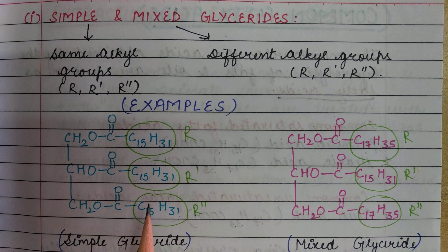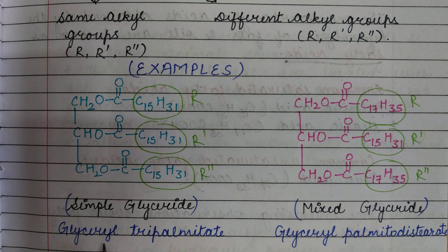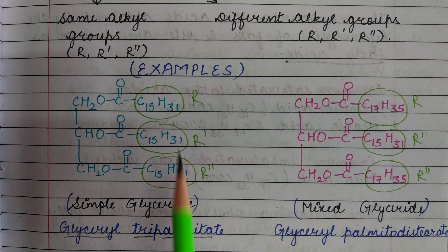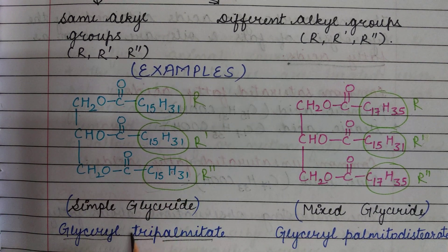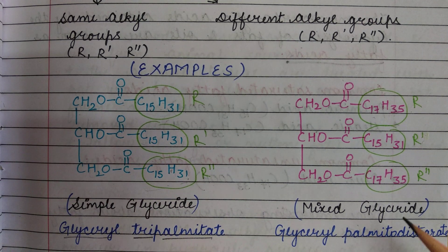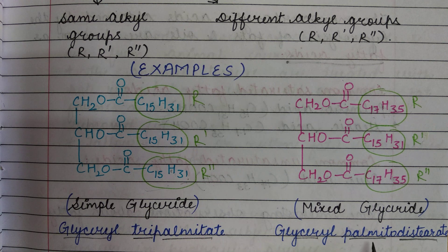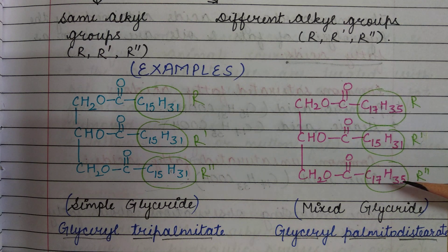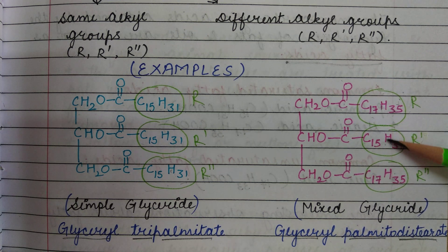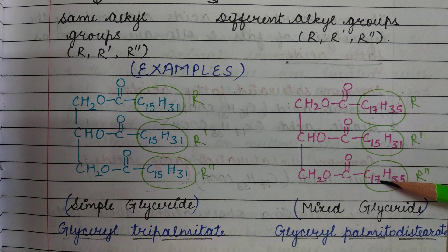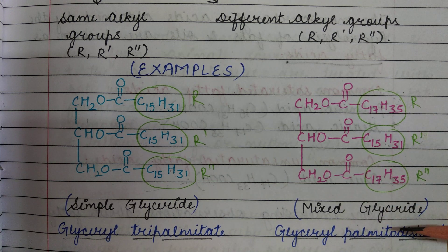The name of the first simple glyceride is glyceryl tripalmitate, because this is a palmitate group and three of them are present. The mixed glyceride is named glyceryl palmitodistearate — 'distearate' because two R groups are C17 (stearate), and one group is C15 (palmitate). So it is glyceryl palmitodistearate.